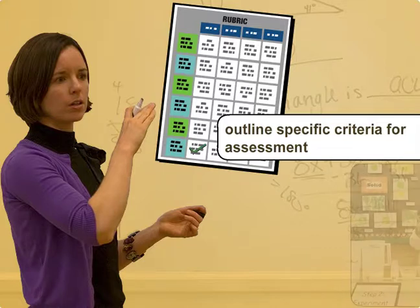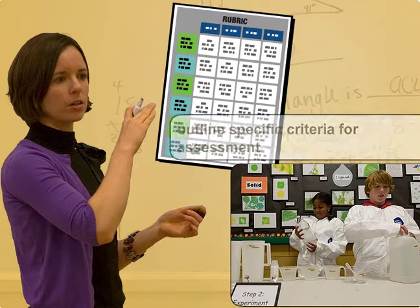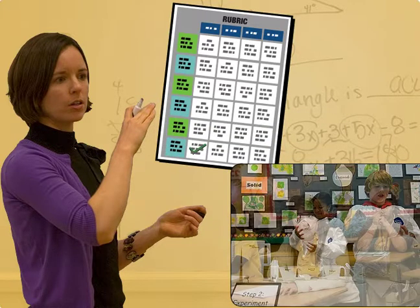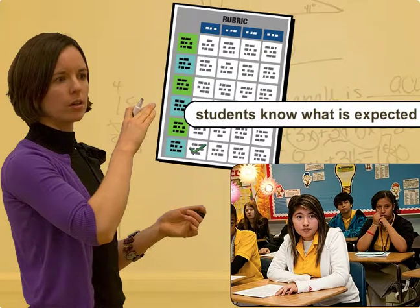For example, before students begin a science lab experiment, the teacher can provide a rubric that lists each standard that is represented in the lab activity, such as: students need to draw and label three stages of chemical change. In this way, students know what is expected of them before beginning the activity. They understand that their work will be assessed according to the rubric and that the teacher will note where they do or do not meet the criteria.